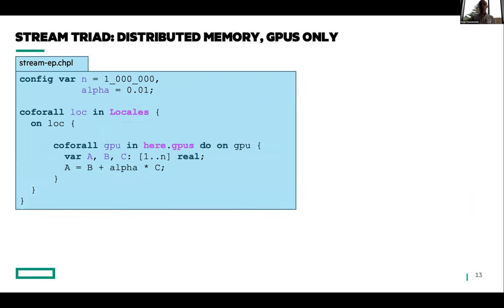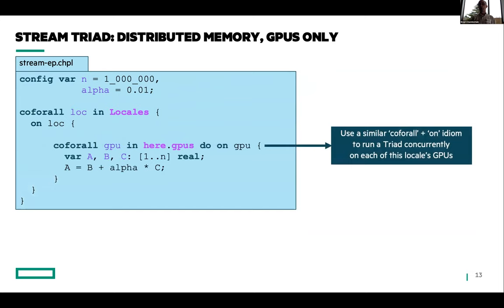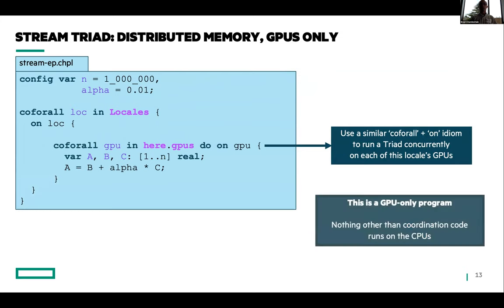But again, with a small change, we can start doing that. So here's another coforall loop. This says on my node, let me iterate over all of my GPUs. Let me run on that GPU. And then I'm going to do the same shared memory computations before, but I'm going to allocate the arrays in GPU memory to do the computations using the GPU cores. So now I've got a GPU-only program. Nothing's going to run on the CPUs other than the coordination code to launch the kernels and tear things down, stuff like that.